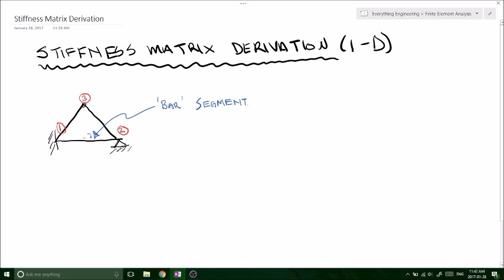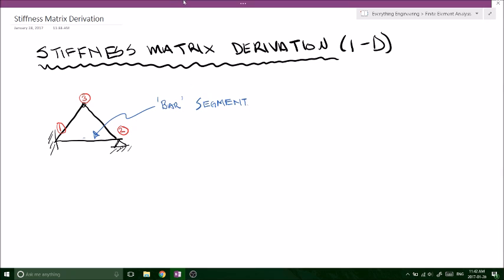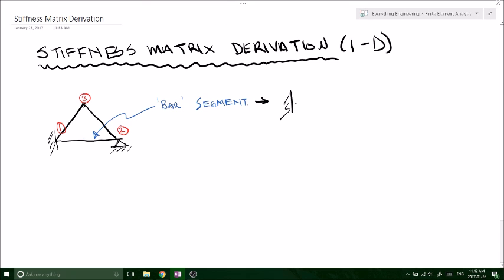So if we could isolate this bar segment and examine it further, we've got a fixed pin support just like structural analysis with a modulus of elasticity E, length L, and a cross-sectional area of A.